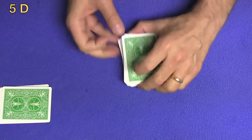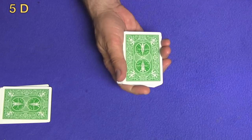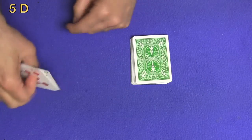It is a magic shuffle because I was just able to get your selected card, the five of diamonds, this many cards down.